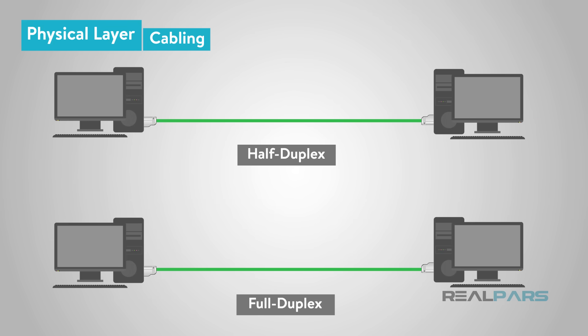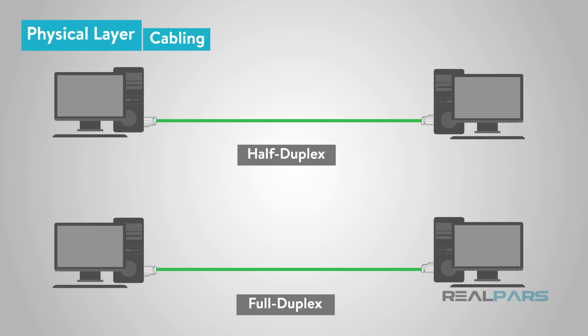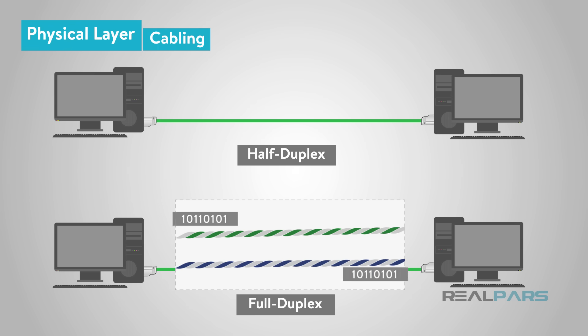The Ethernet twisted pair utilizes RJ45 8-pin connectors at either end of the cable, that are pinned for transmitting and receiving data in either half or full duplex mode. Half duplex transmits data in one direction at a time, while full duplex allows data to be transmitted in both directions at the same time. Full duplex in Ethernet can be achieved by using two pairs of wires to allow data to travel both directions simultaneously.